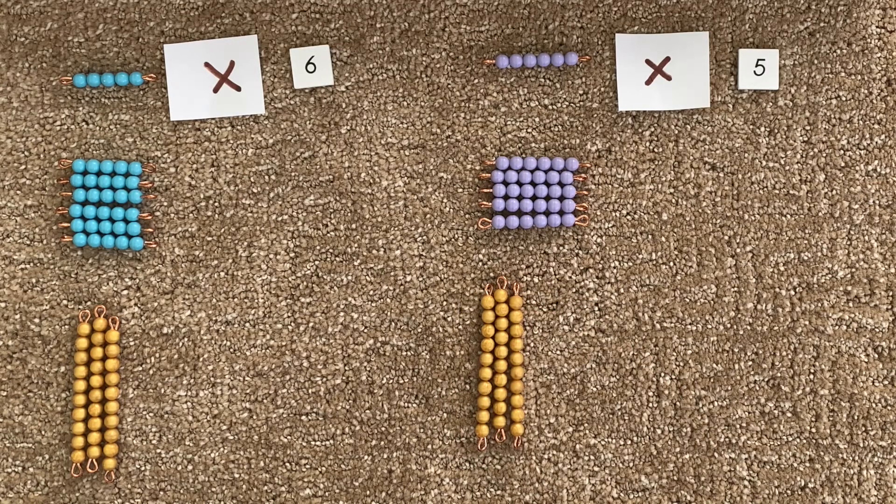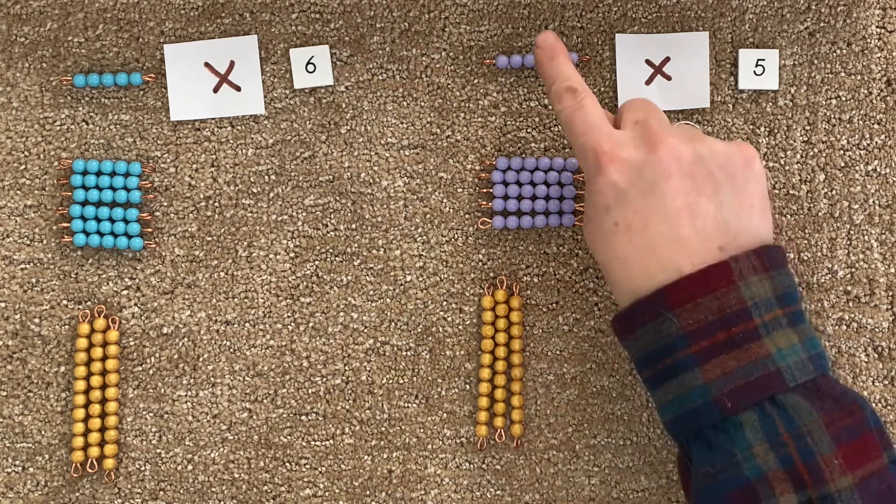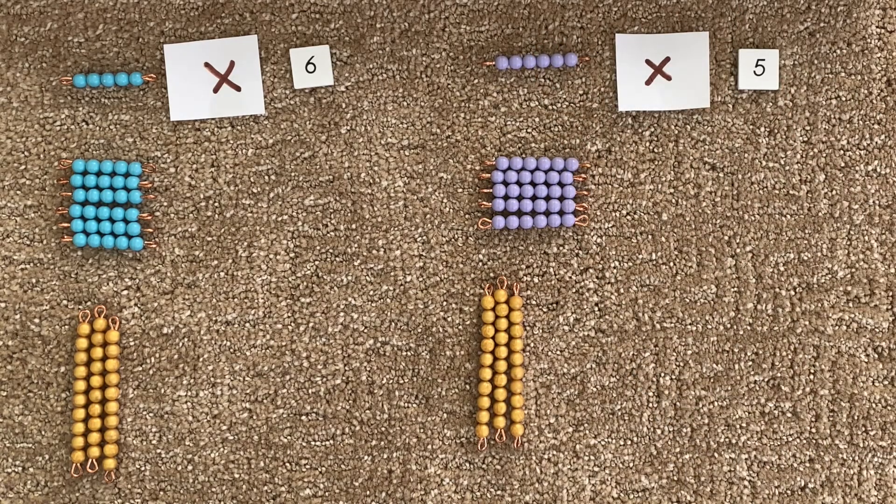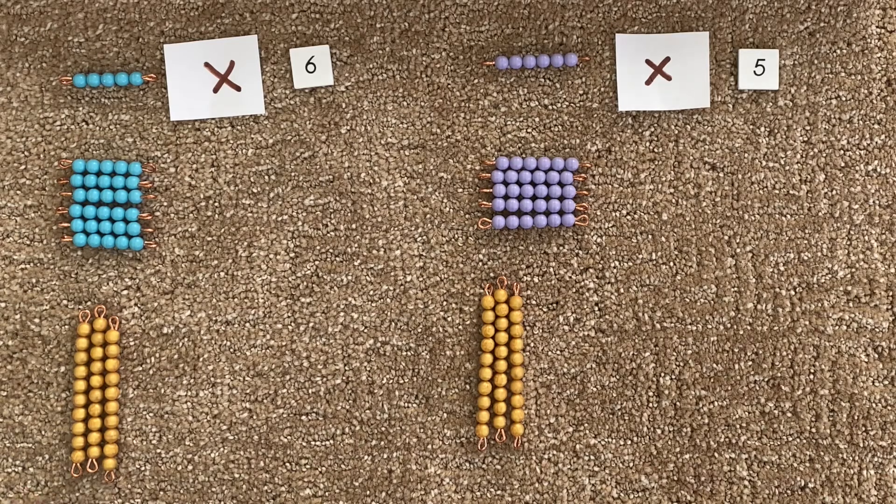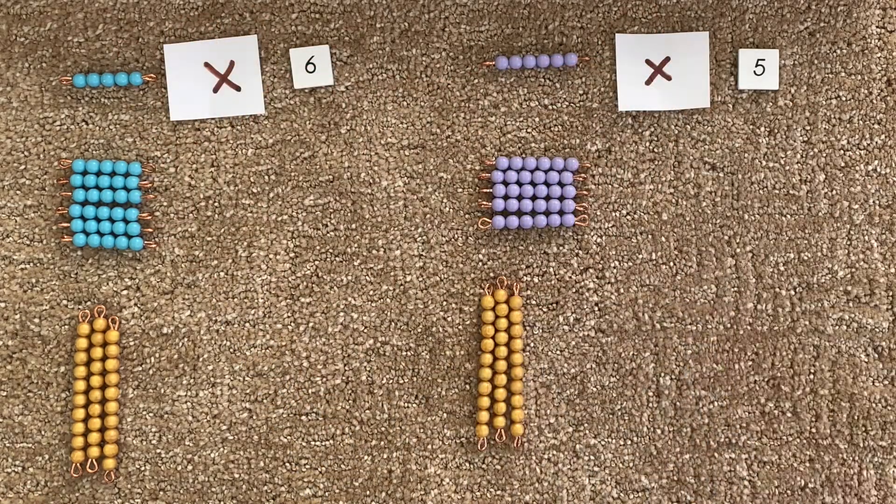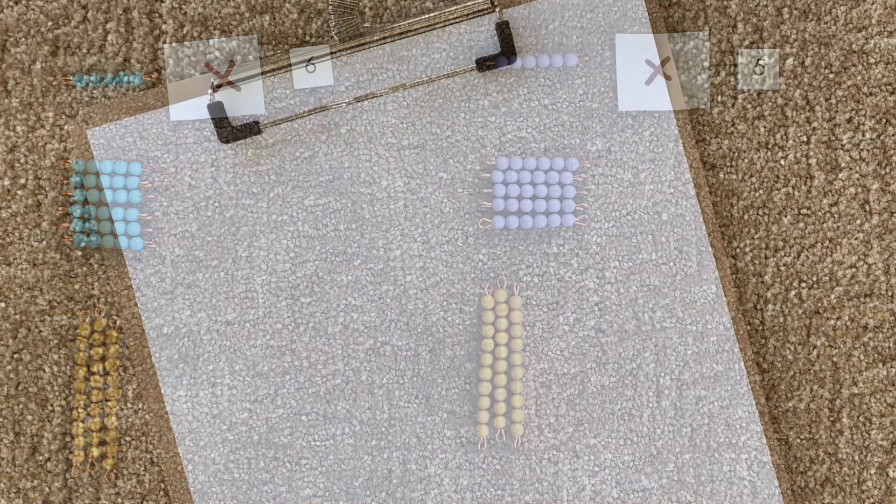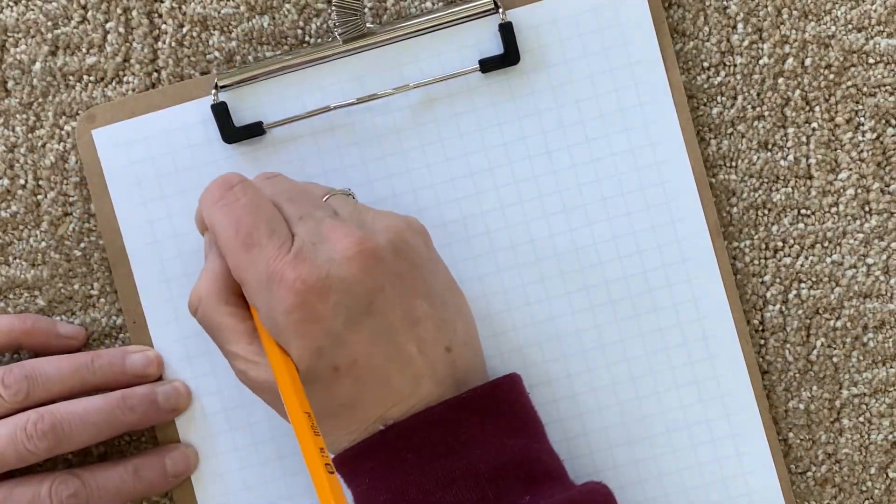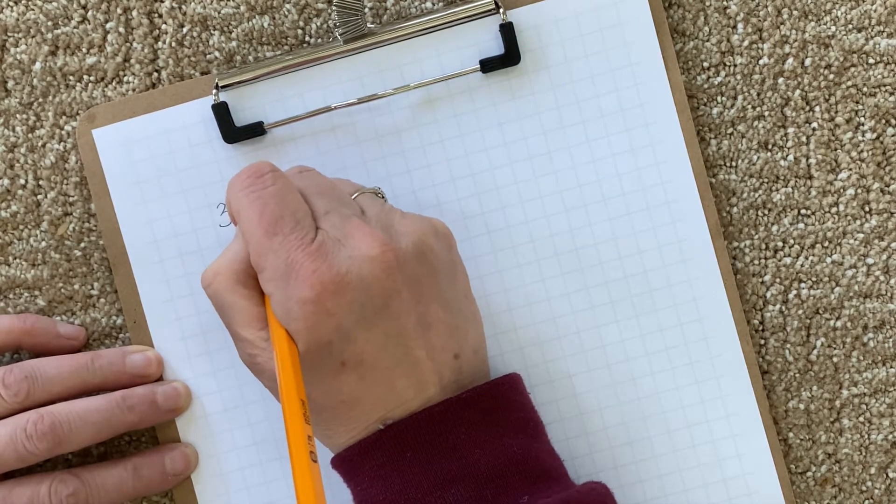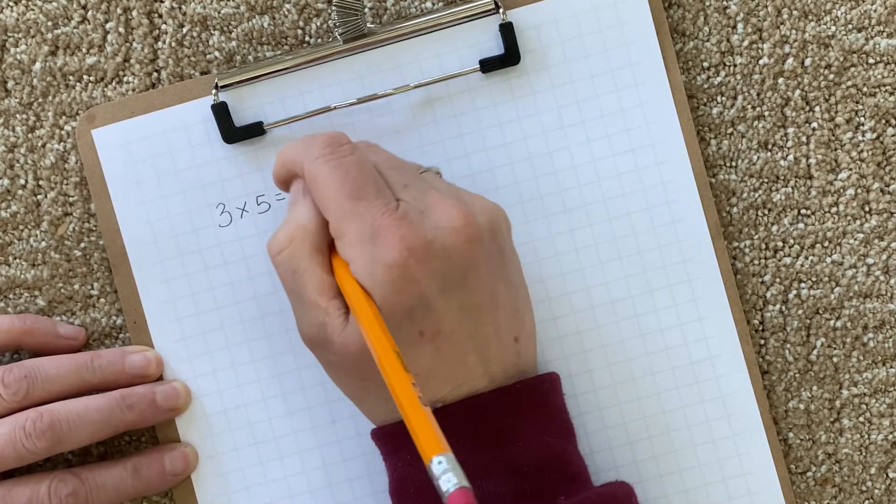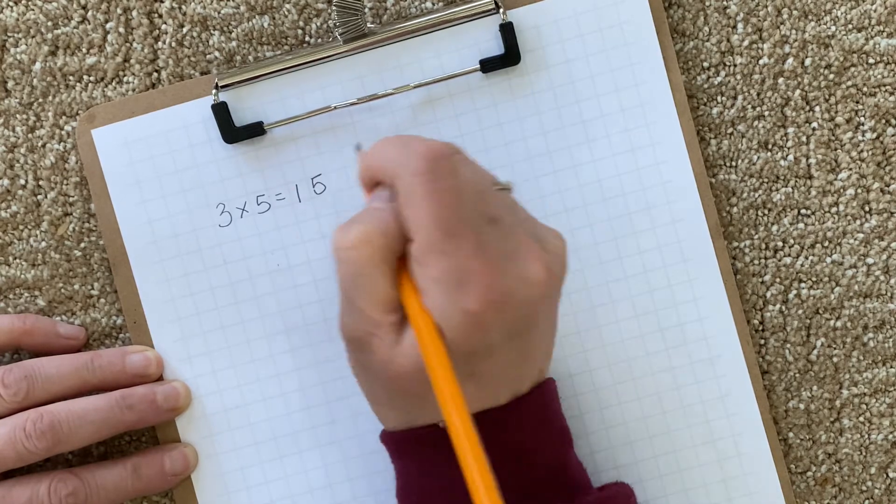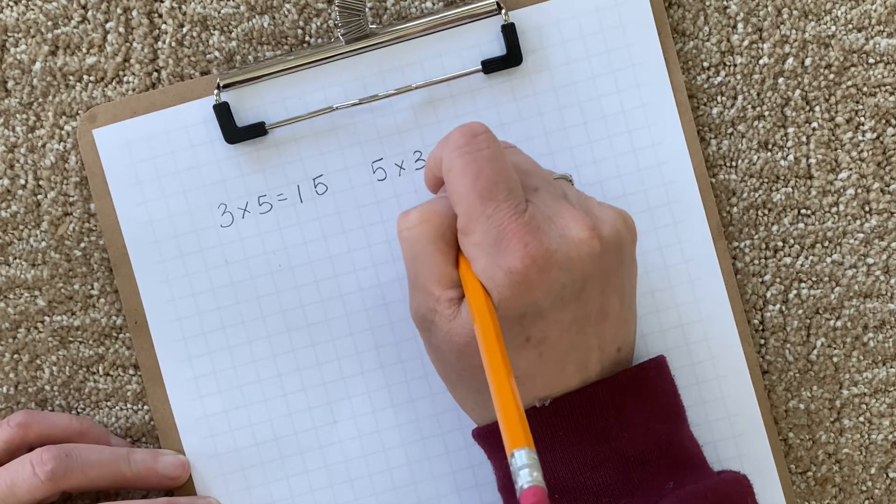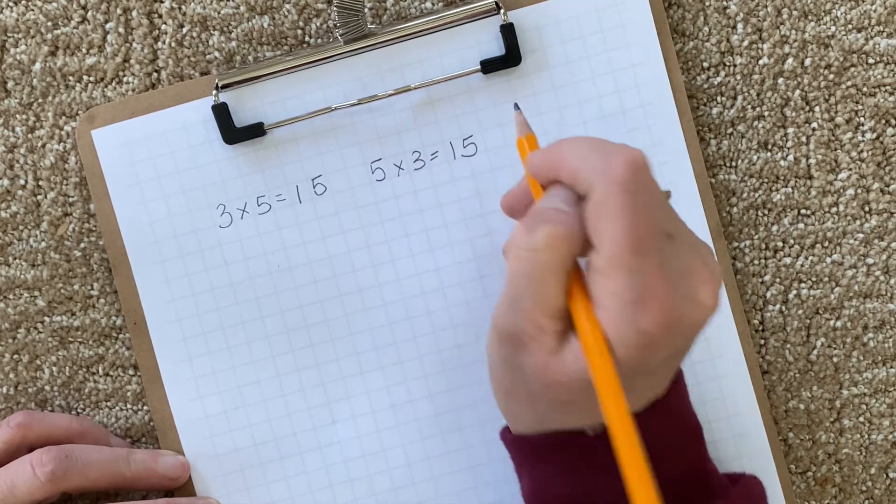I encourage you to experiment with different bead and tile combinations and see if you get the same product every time when you switch around the multiplier and the multiplicand. So do you remember for our first problem? We did three taken five times and we discovered that that equals 15. And then we did five taken three times and discovered that that two equals 15.